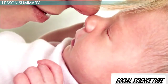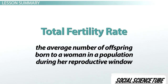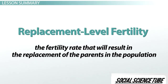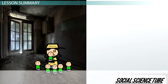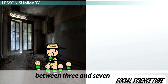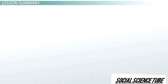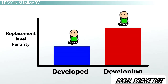There are two population characteristics that relate to births and fertility. The first is total fertility rate, the average number of offspring born to a woman during her reproductive window. The second is replacement level fertility, the fertility rate that results in the replacement of the parents in the population. Both statistics are higher in developing countries. Total fertility is between 3 and 7 children per woman in developing countries, and between 1 and 3 in developed countries. Replacement level fertility is around 2.1 in developed countries and 2.6 for developing countries.